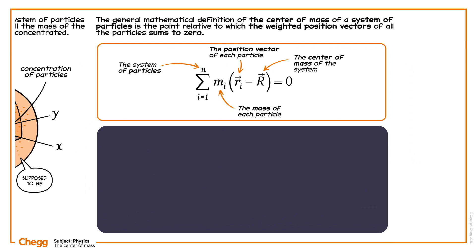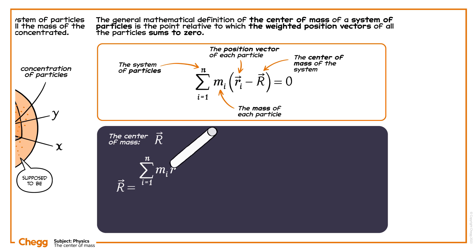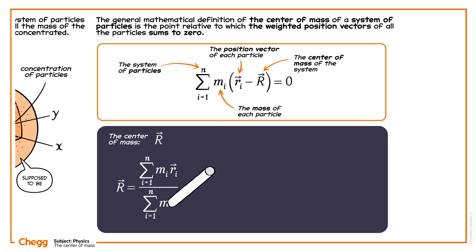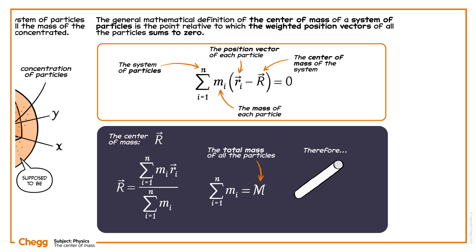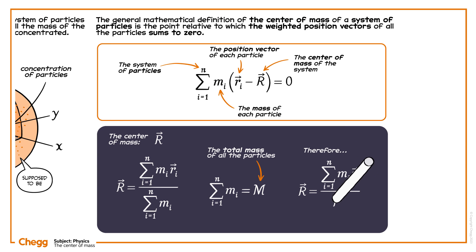Rearranging the above equation for the centre of mass, vector r equals the sum of the product of m_i and vector r_i, going from i equals 1 to n, divided by the sum of m_i from i equals 1 to n. Taking M as the total mass of all the particles, therefore vector r equals the sum of m_i times vector r_i from i equals 1 to n, divided by capital M.